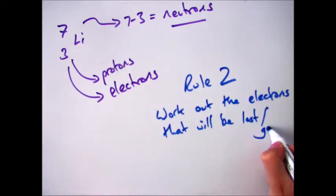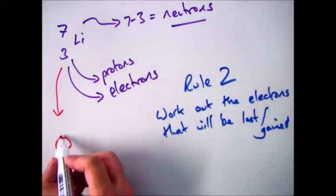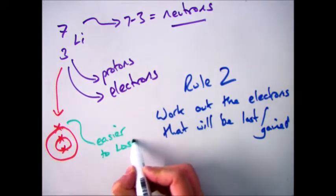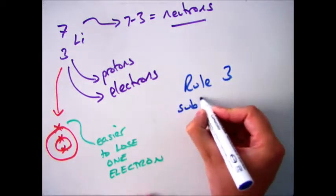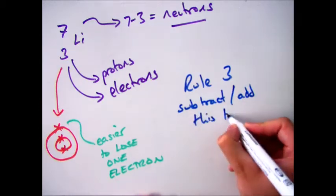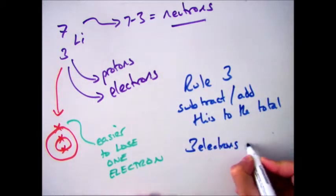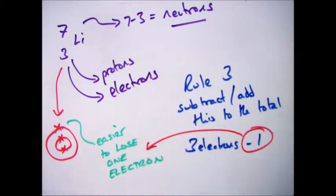And to do that, the best thing to do is to draw out the electronic configuration. So if we were to draw lithium, we know we've got 2 electrons in the first shell, 1 electron in the second, making it up to 3. And it wants to lose 1 electron to get that full outer shell. And your next step is to either subtract or add that number onto your total number of electrons, depending on whether it's lost or gained. For example, lithium had 3, you've taken 1 away, therefore your number of electrons remaining is 2.